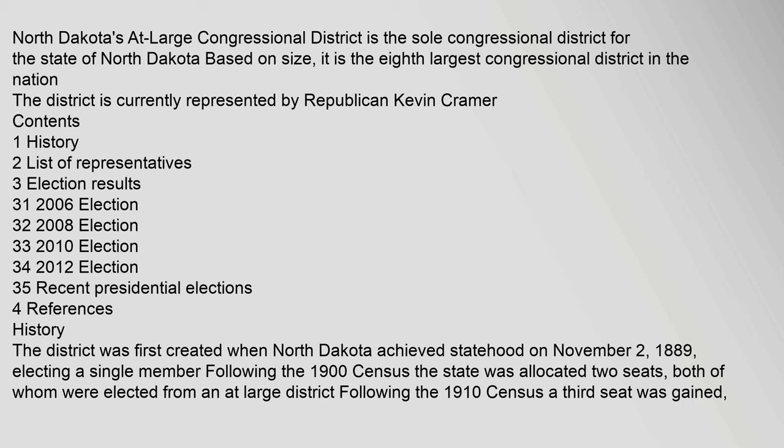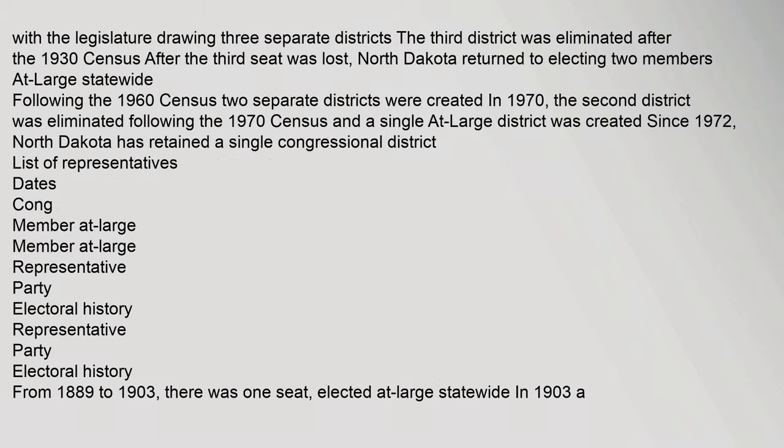The district was first created when North Dakota achieved statehood on November 2, 1889. Electing a single member, following the 1900 census the state was allocated two seats, both elected from an at-large district. Following the 1910 census, a third seat was gained, with the legislature drawing three separate districts. The third district was eliminated after the 1930 census.